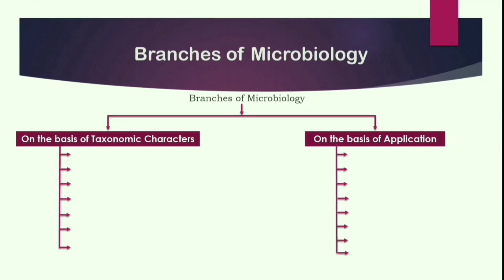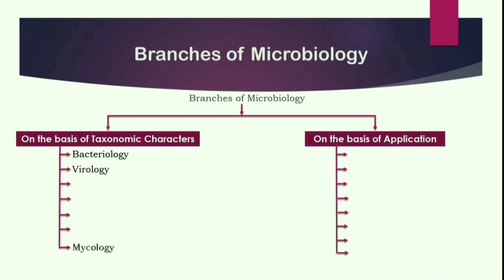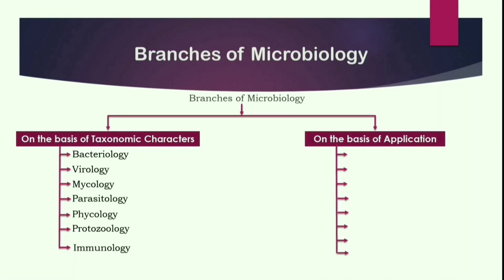The first type is on the basis of taxonomic characteristics, where the morphological, physiological, and molecular characteristics of microorganisms are studied. The branches under this category are: bacteriology, virology, mycology, parasitology, phycology, protozoology, and immunology.